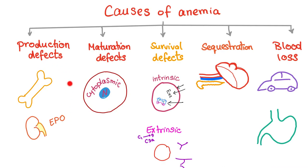In the hypoproliferative category, what do you predict the reticulocyte count will be — high or low? It will be low. The factory is broken, so both baby RBCs and mature RBCs are decreased.